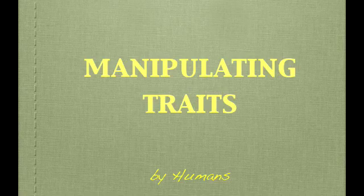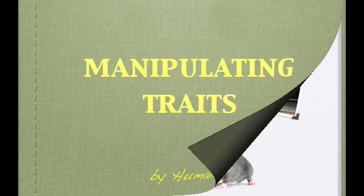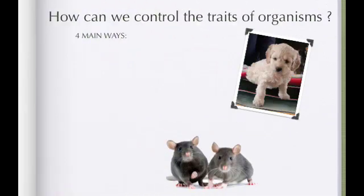Hey everyone, this was our lesson on manipulating traits — how we can control the outcome of an organism. Our goal was: how can we control the traits of an organism? And we said there were four main ways.